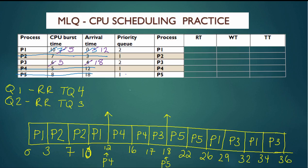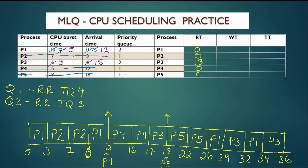To calculate response time, you go from when the process arrived to the very first time it gets on the CPU. P1 arrived at time 0 and first got on the CPU at time 0, so P1's response time is 0. P2 arrived at time 3 and got on the CPU at time 3, so response time is 0. P3 arrived at time 4 and had to wait until time 17 to get on the CPU, so its response time is 13. P4 arrived at time 12 and preempted immediately, so response time is 0. P5 also preempted immediately, so P5's response time is 0.